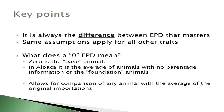Key points when you interpret EPD: it's always the difference. An EPD on one animal really doesn't tell you a lot unless you know who you're comparing it to, or you're comparing it to the average of your herd. The same assumptions apply for all the traits. We're predicting average merit of the progeny with EPDs, and these assumptions apply to all other traits for which we have EPDs.